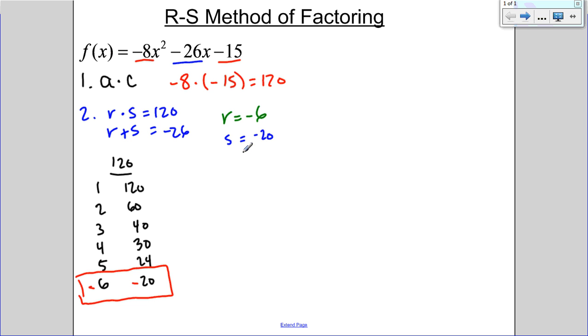And my S I'm going to have as negative 20. It's arbitrary which one you use with R and S. You can flip these. It doesn't really matter. That's going to change what it looks like over here, though. What I'm going to do is I'm going to rewrite this quadratic. I'm going to write it as negative 8x squared.